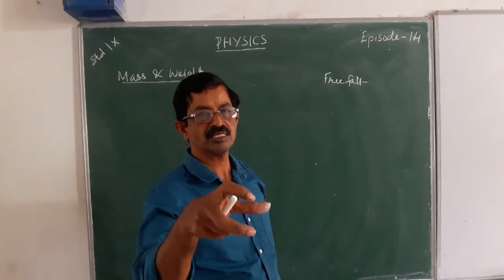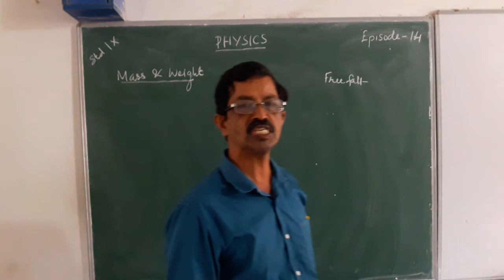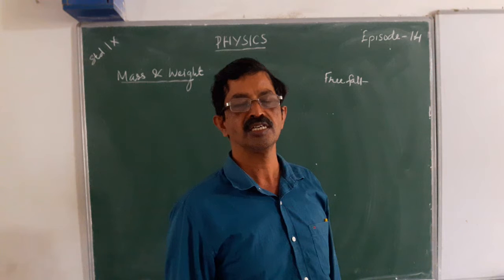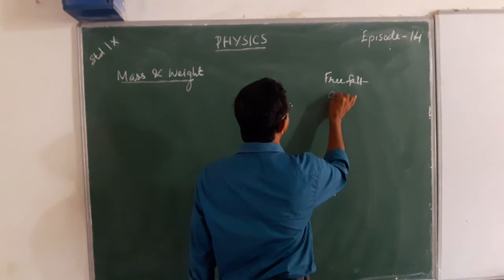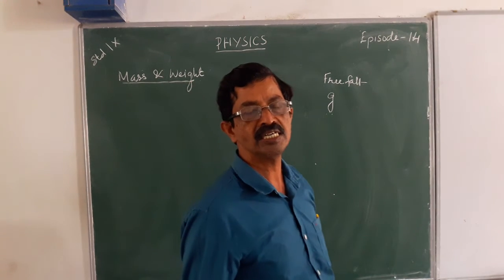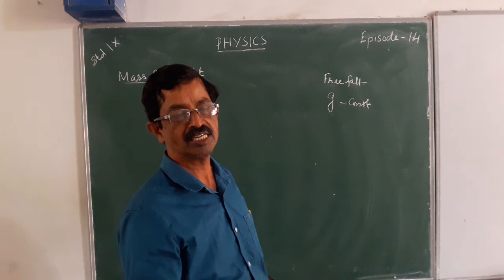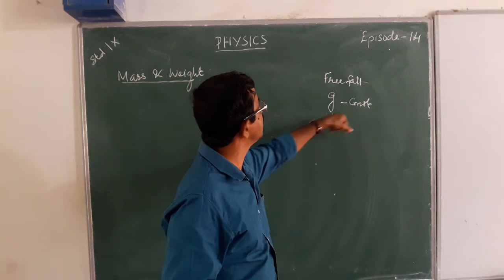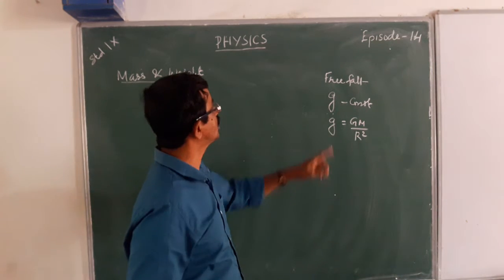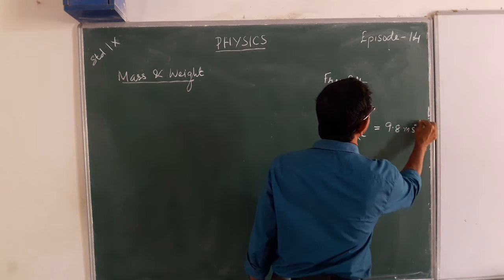When a body is under free fall, its direction of velocity does not change but its magnitude changes. That means it is accelerating, and that acceleration is called acceleration due to gravity, represented with the letter g. For a particular place, the value of g is constant. We get from the relation g = GM/R² and its value near the surface of Earth is 9.8 meter per second square.